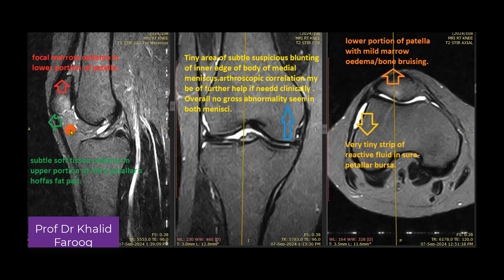On axial images, we can see a very tiny strip of fluid in the suprapatellar bursa, and mild marrow edema is also identified on axial images. These changes are due to repeated microtrauma injury leading to bone bruising and impingement of Hoffa's fat pad, which is the cause of pain in the anterior joint compartment.